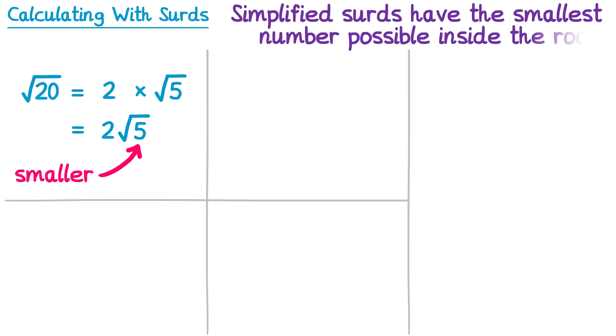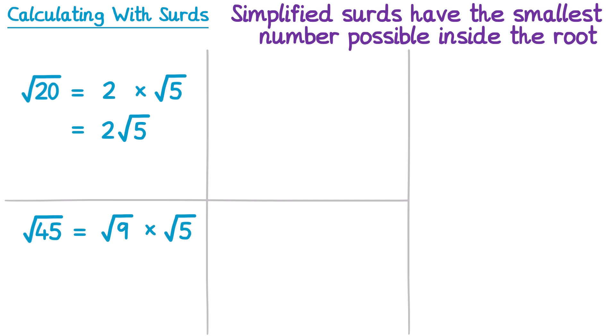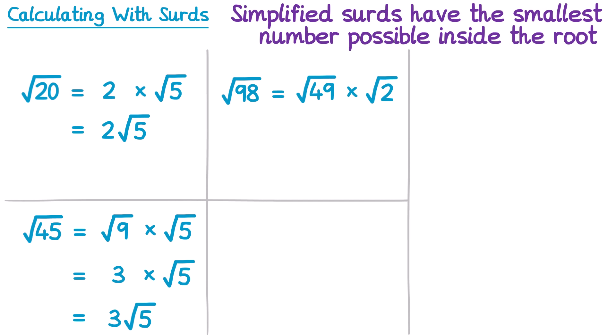So simplified surds have the smallest number possible inside the square root. Let's look at the square root of 45 — this could be split into the square root of 9 times the square root of 5. The square root of 9 is just 3, so this is 3 root 5. Then the square root of 98: this is the square root of 49 times the square root of 2. The square root of 49 is 7, so it's 7 root 2.